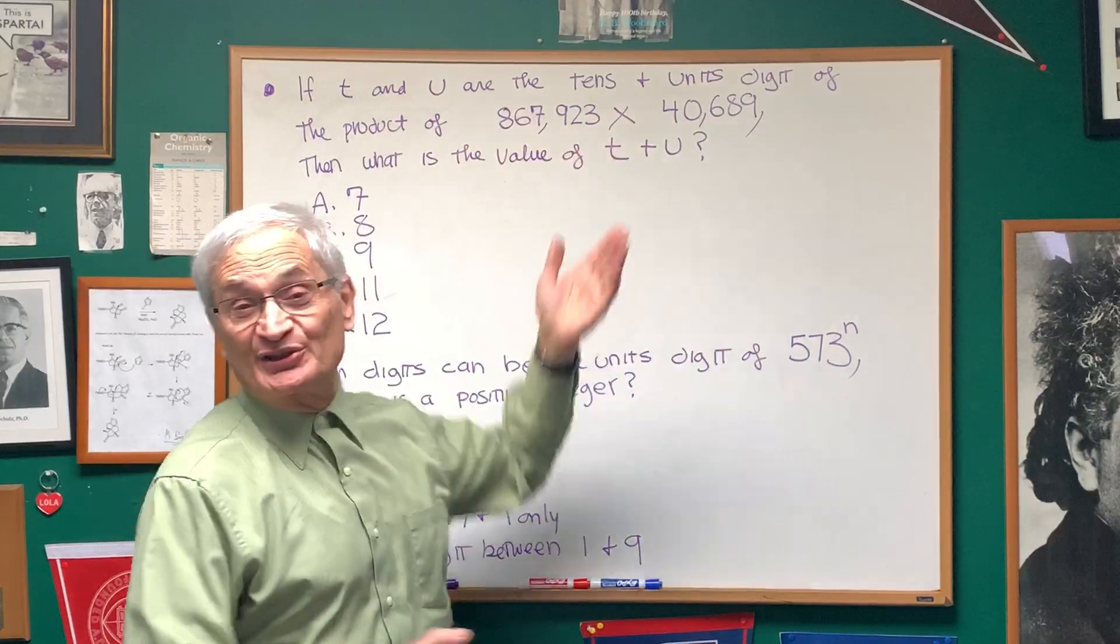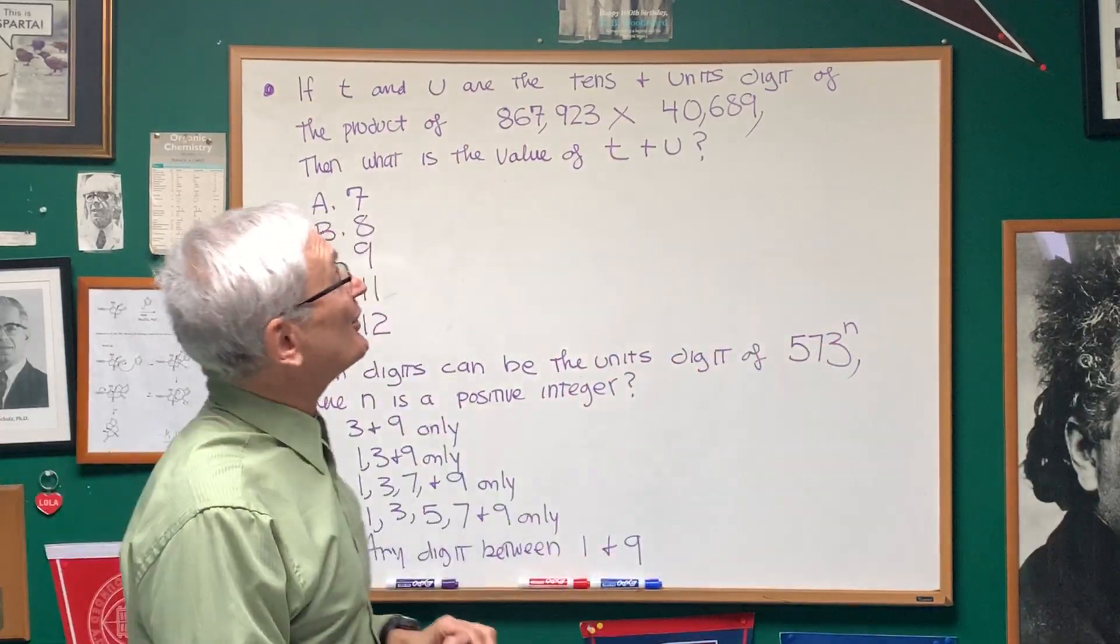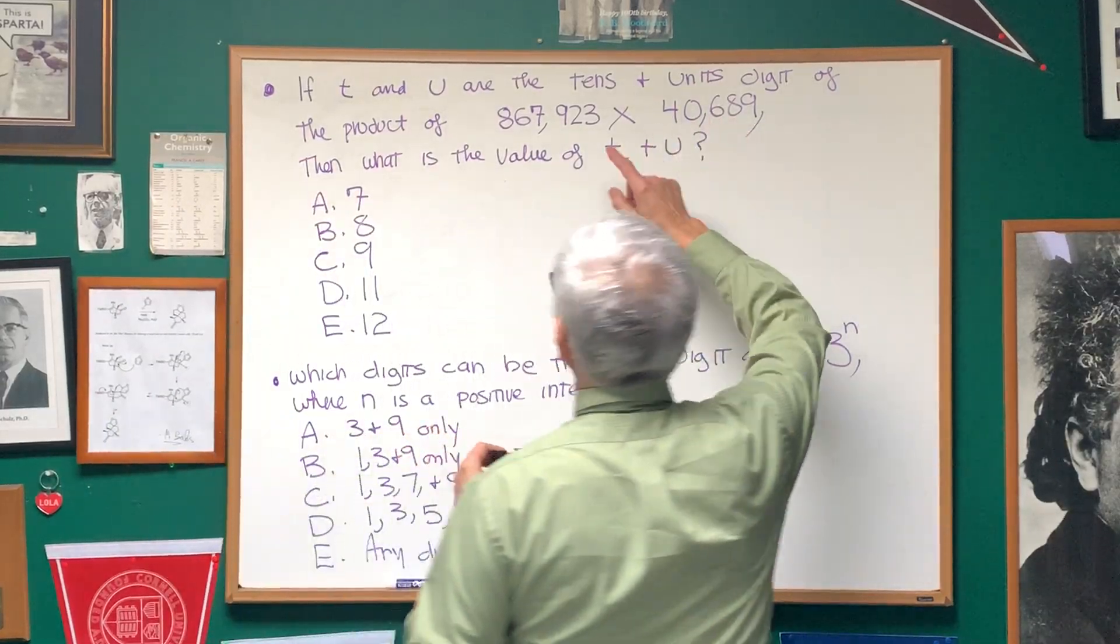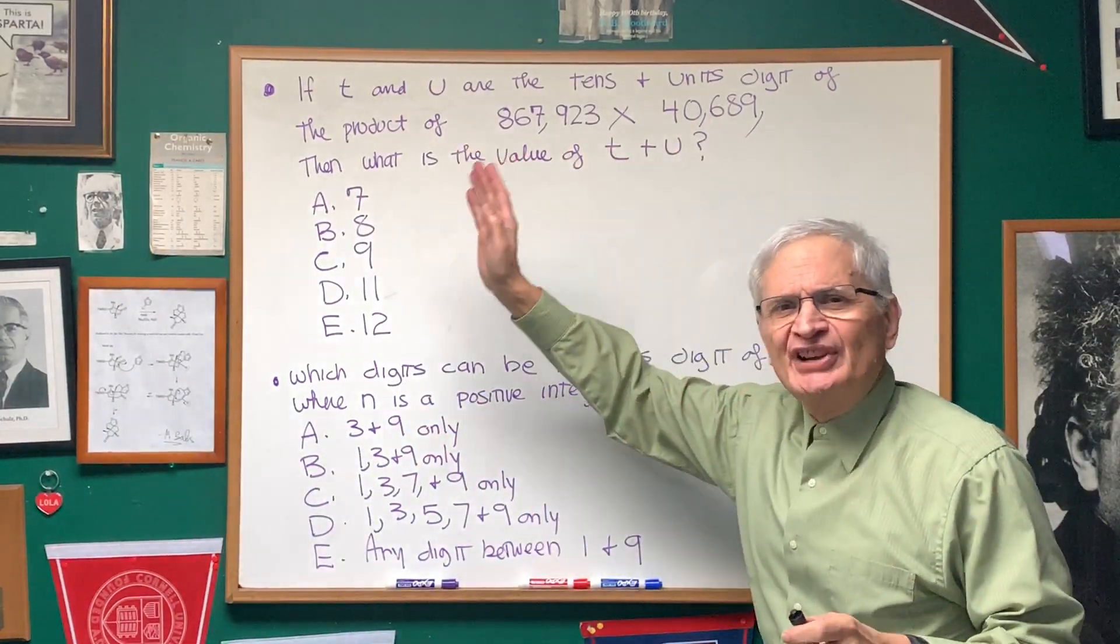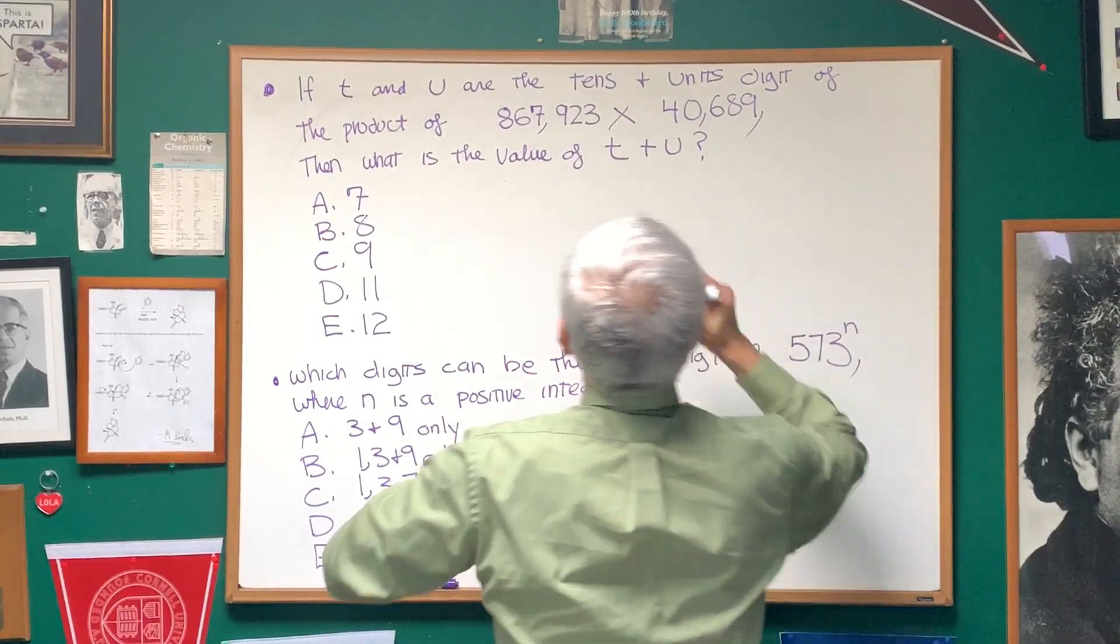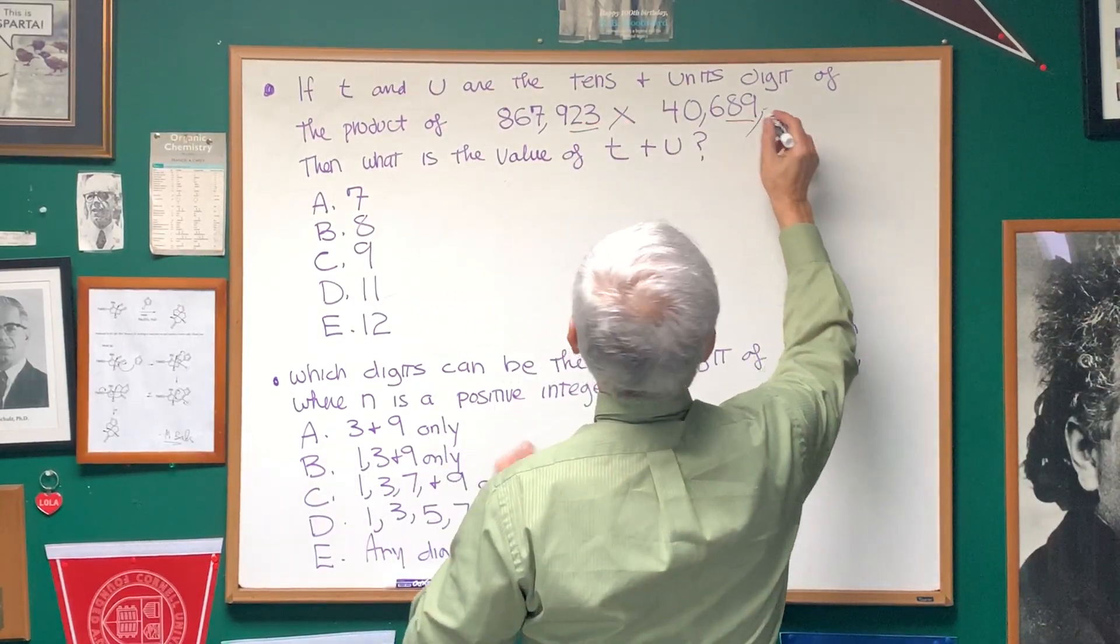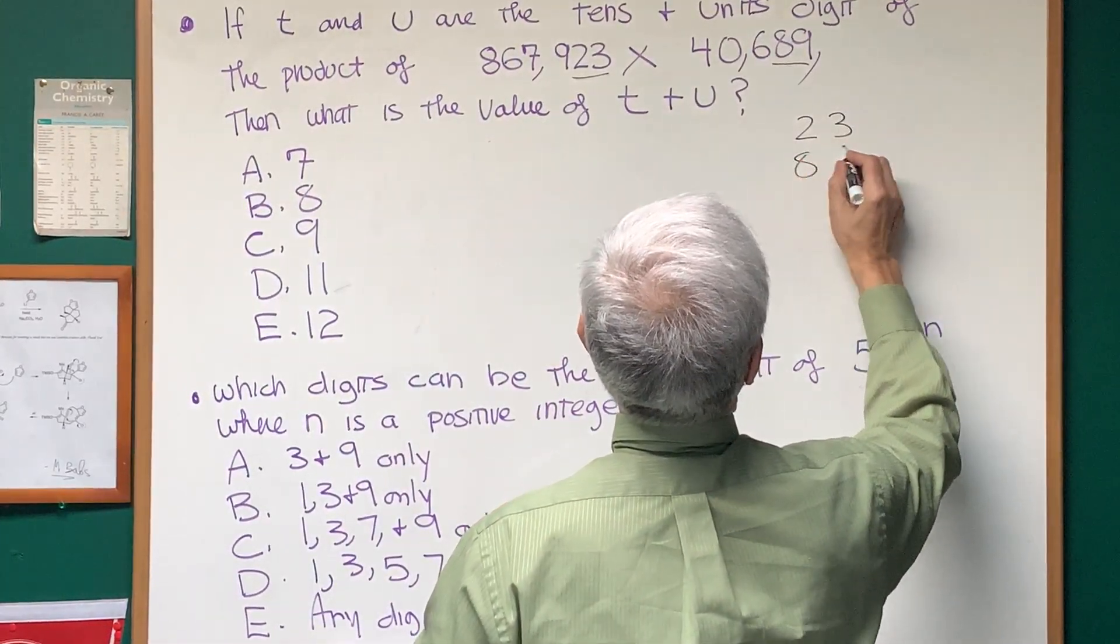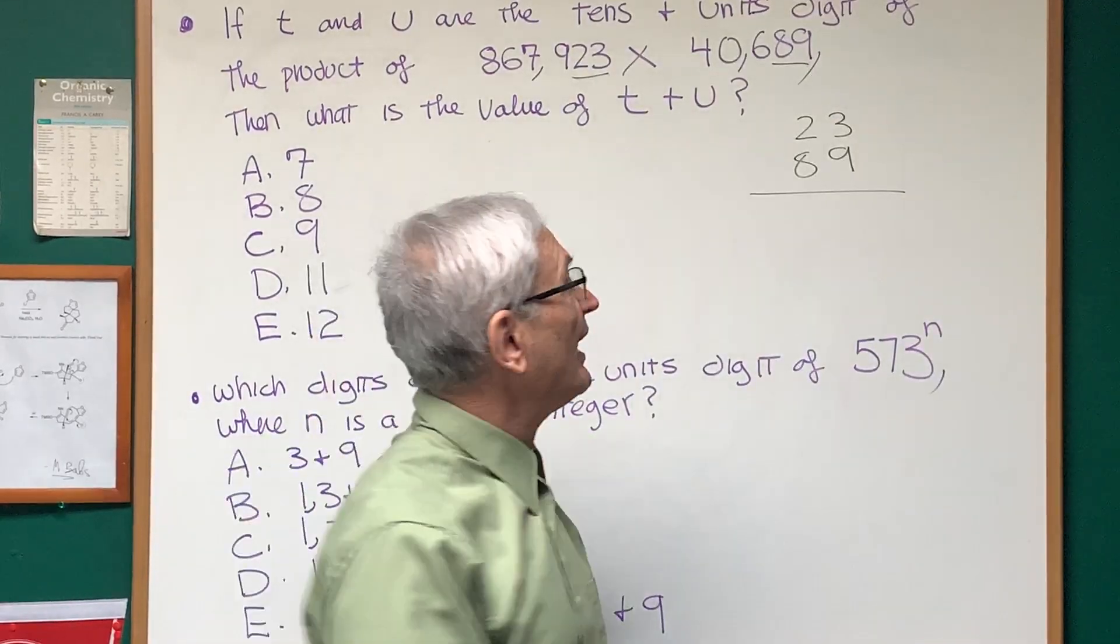Well, it's simple, right? Just multiply those in your head? Well, you don't really need to multiply the whole thing. All you really need to do, since we're just concerned with the tens and units place, all we need to do is concentrate on the tens and units place of each of those two numbers, 23 and 89. Let's multiply those two together.